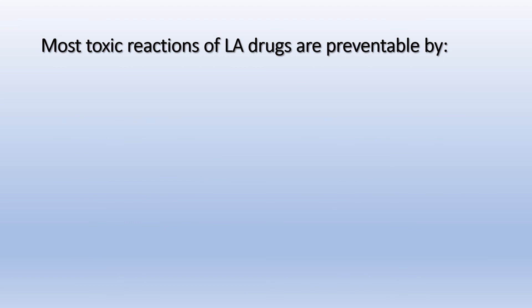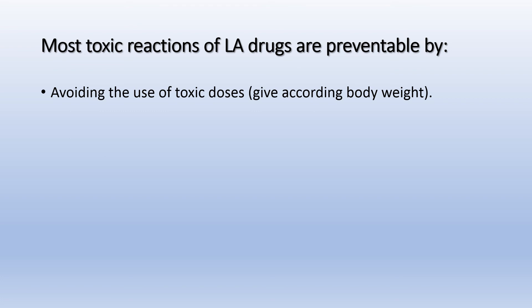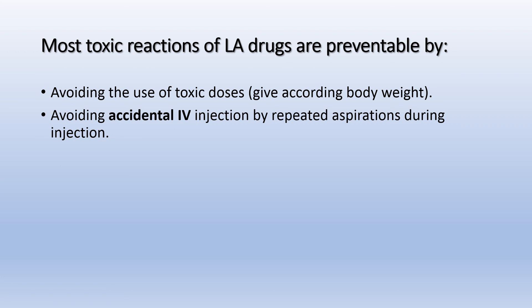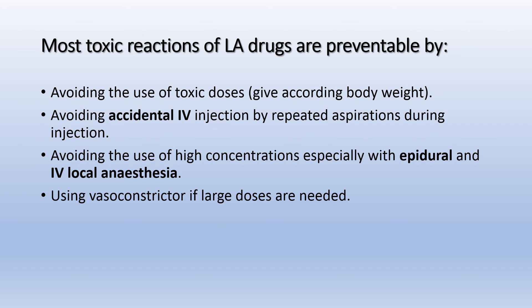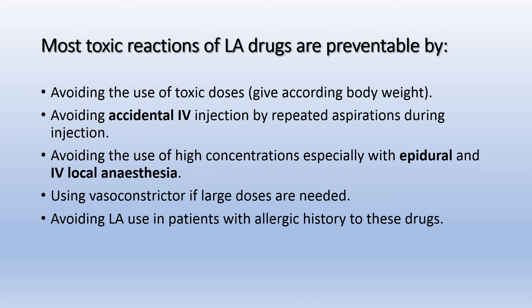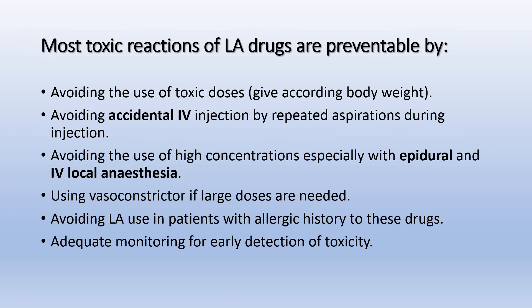Most toxic actions of local anesthetic drugs are preventable by: avoiding the use of toxic doses; avoiding accidental intravenous injection by repeated aspiration during injection; avoiding the use of high concentrations especially with epidural and IV local anesthesia; using vasoconstrictors if large doses are needed; avoiding local anesthesia in patients with an allergic history to these drugs; and adequate monitoring for early detection of toxicity.